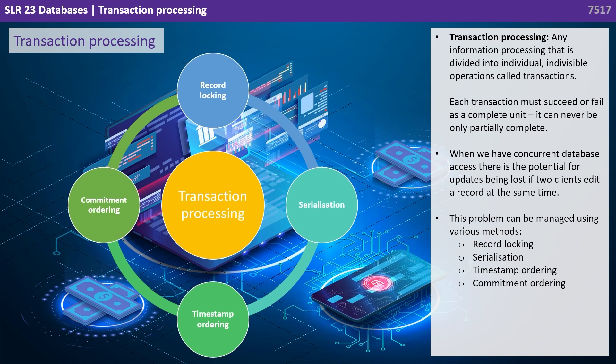When we have concurrent database access, there is potential for updates being lost if two clients edit a record at the same time. This problem can be managed using various methods, including record locking, serialization, timestamp ordering, and commitment ordering.